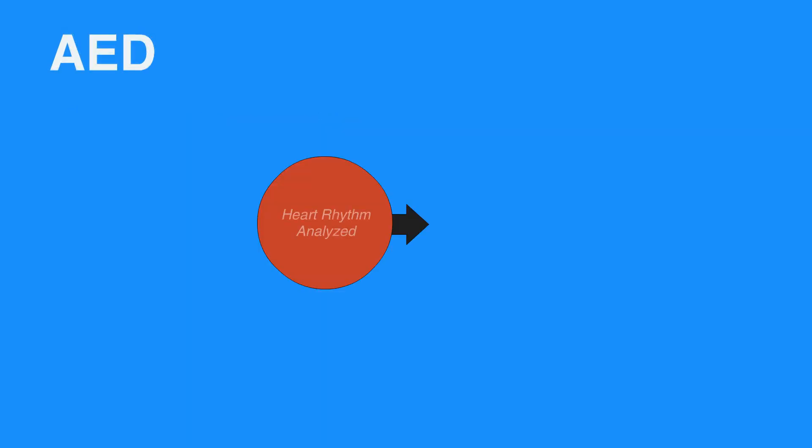Once the rhythm is analyzed, the device will direct you to shock the individual if a shock is indicated. A shock depolarizes all heart muscle cells at once, attempting to organize its electrical activity. In other words, the shock is intended to reset the heart's abnormal electrical activity into a normal rhythm.